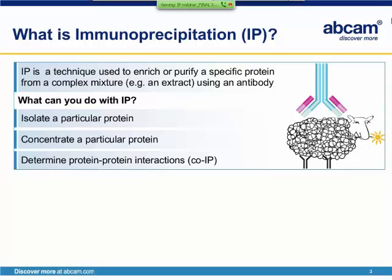Or you can determine protein-protein interactions in so-called co-IP. In this technique, the protein of interest is immunoprecipitated and you then check either by western blot or mass spec if other proteins were co-purified with your protein of interest.